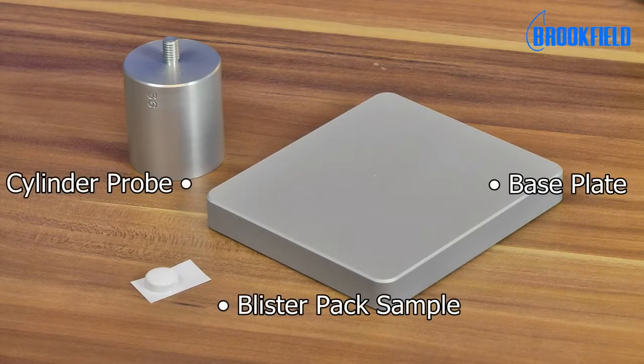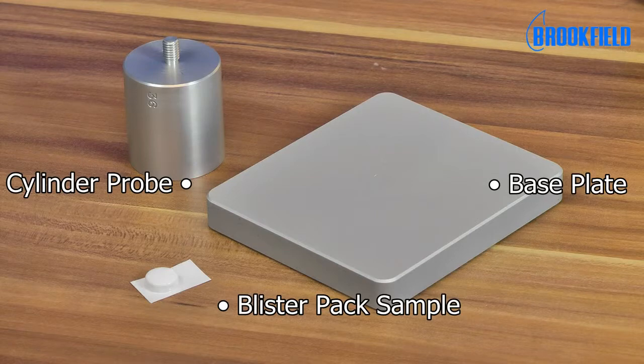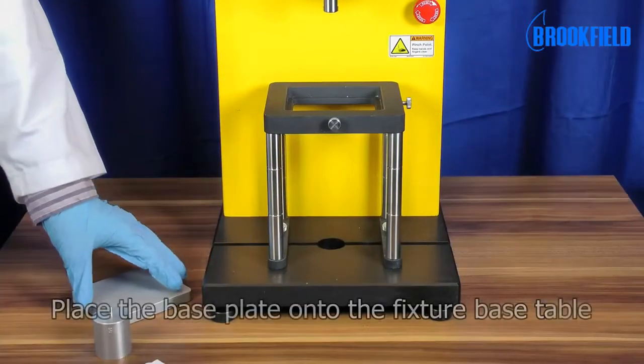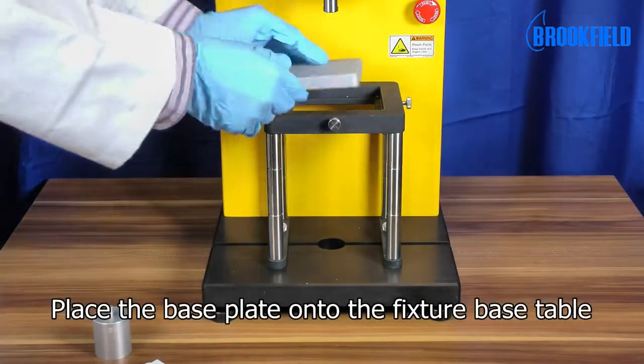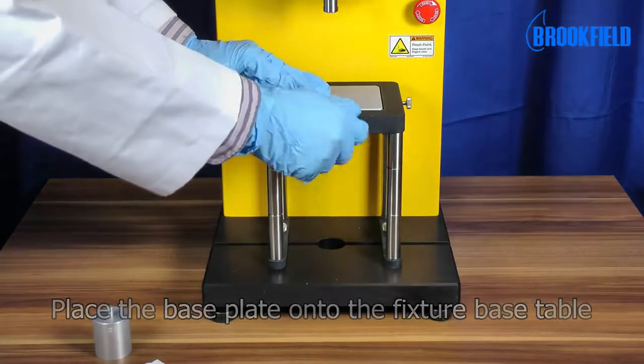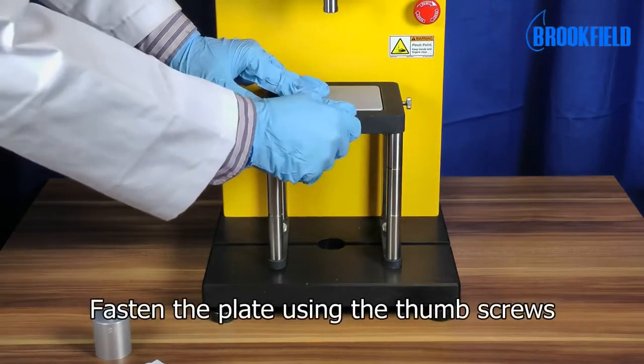Here you see the individual parts of the accessory. To set up the test, place the base plate onto the fixture base table and tighten into position using the thumb screws.